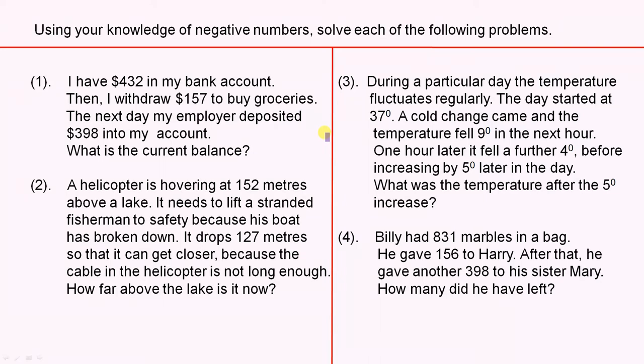Example two: A helicopter is hovering at 152 metres above a lake. It needs to lift a stranded fisherman to safety because his boat has broken down. It drops 127 metres so that it can get closer, because the cable in the helicopter is not long enough. This is another perfect example of negative numbers coming into play, requiring a calculation to find the answer.